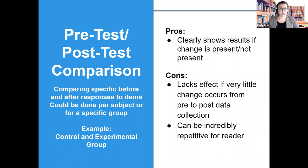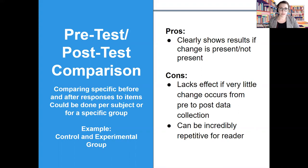If you've used a pretest-posttest model for your data collection, you may want to continue this organization in your analysis section. You can do this by comparing specific before and after responses to items, either per subject or for a specific group in your study. One pro for this structure is that it clearly shows results whether change is present or not. However, there are cons: this model might lack effect if there is very little change from pre to post data collection, and it can be incredibly repetitive for the reader.